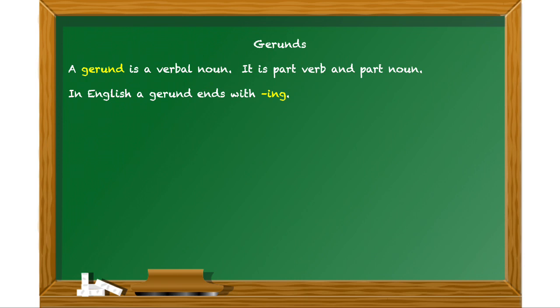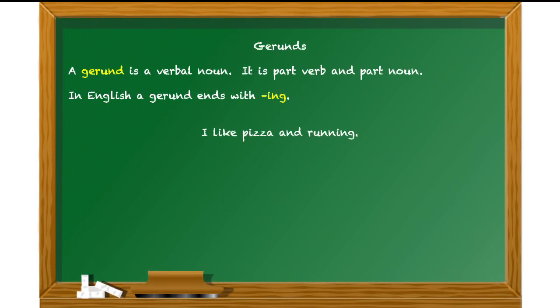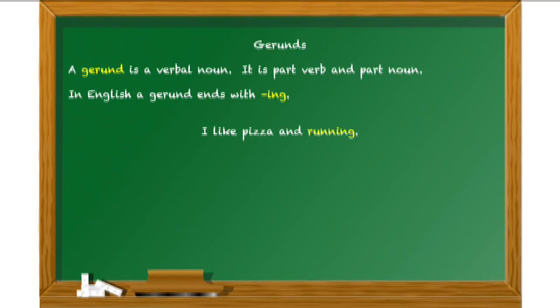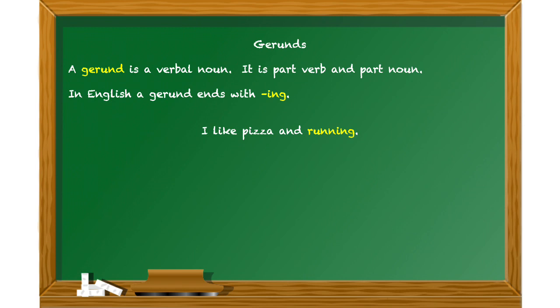In English, we translate gerunds with '-ing', and you'll see that here in this example. Consider the sentence: 'I like pizza and running.' Obviously, both of those words are functioning as nouns. I've highlighted the word 'running' here. 'Run' is obviously a verb — a big action word — but in this sentence it's functioning the same way that 'pizza' is functioning. I like what? I like pizza. I like what? I like running.